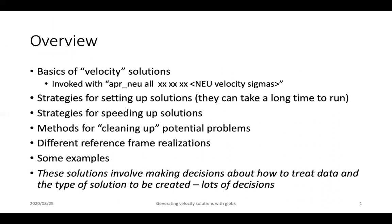For the overview, we'll talk about the basics of velocity solutions, which in general are invoked by setting the APR-NEU or APR-Site command in the GlobK command file to include non-zero terms for the velocity sigmas — the fifth, sixth, and seventh arguments to this command. We'll talk about strategies for setting up the solutions, how to improve your likelihood of getting a good solution on the first run, speeding up those solutions, methods for cleaning up potential problems, how to change your reference frame quickly after running GlobK, and some examples.